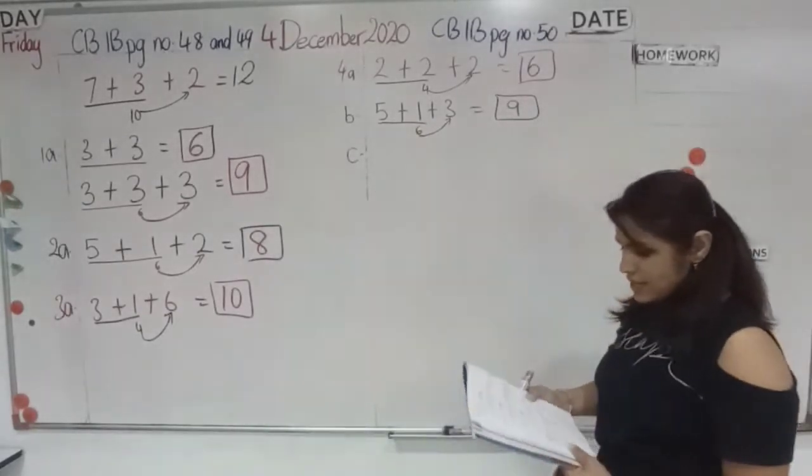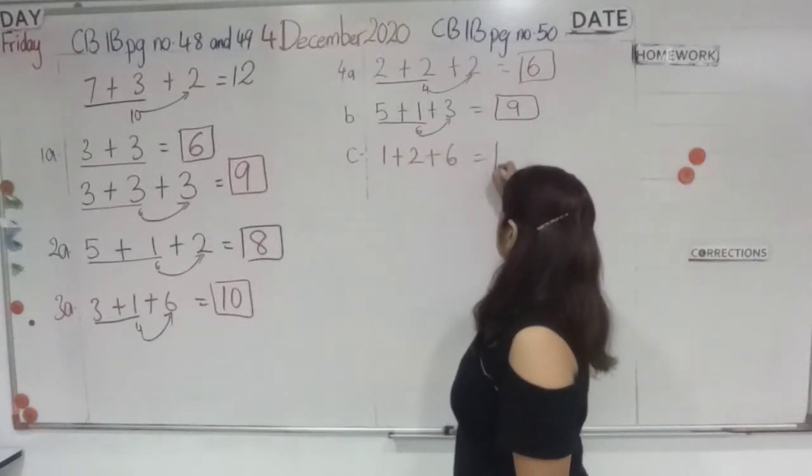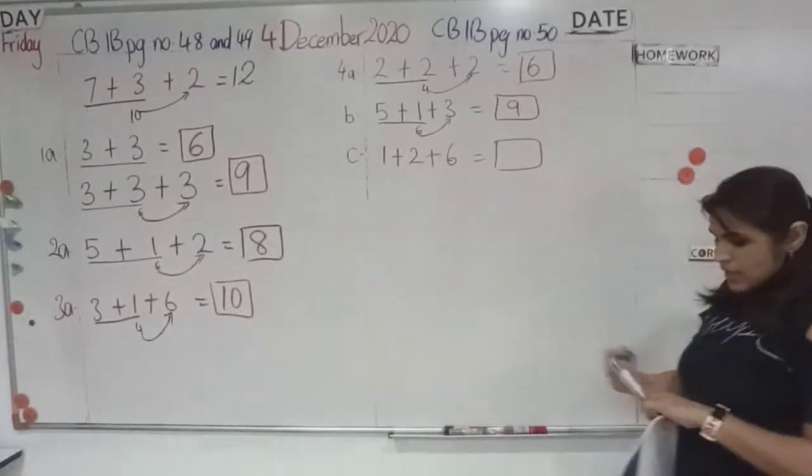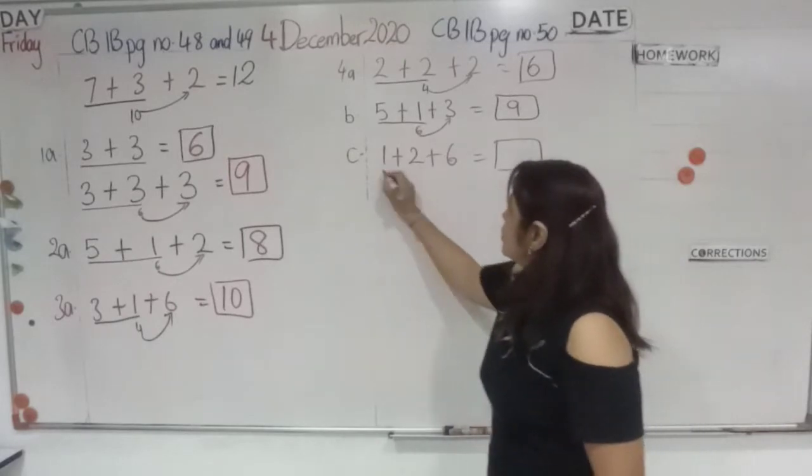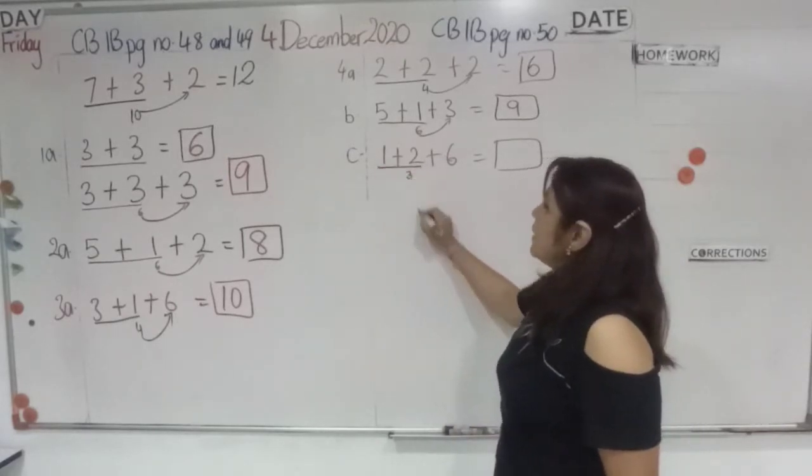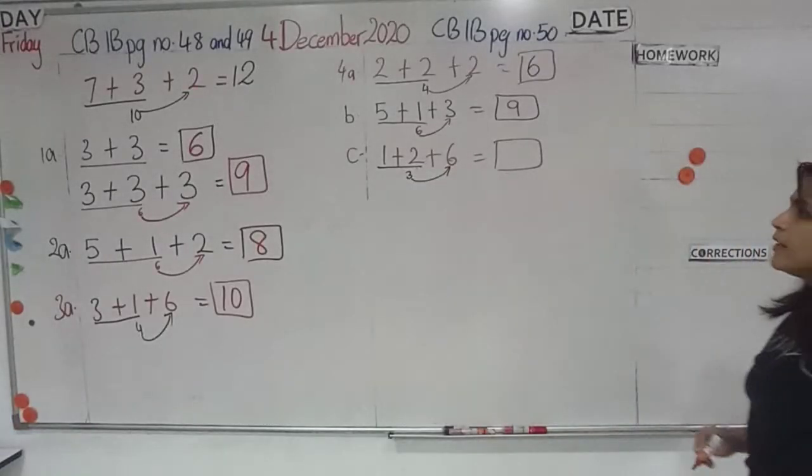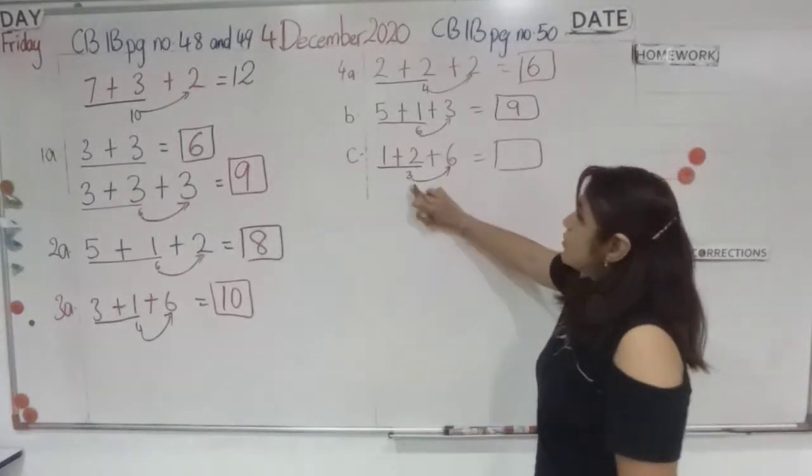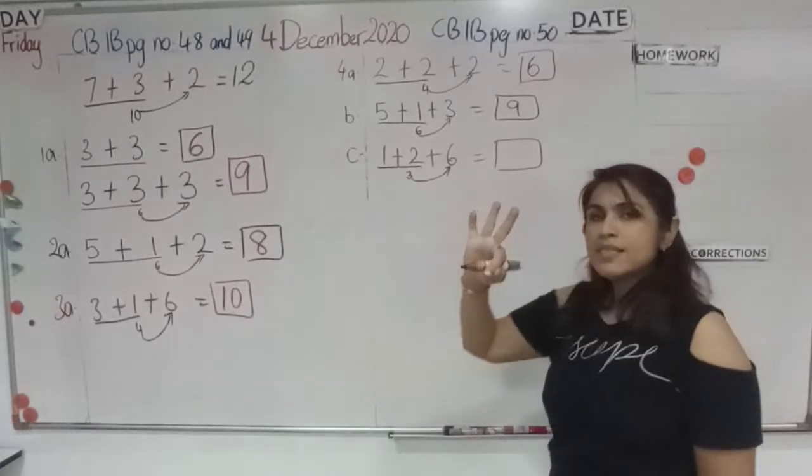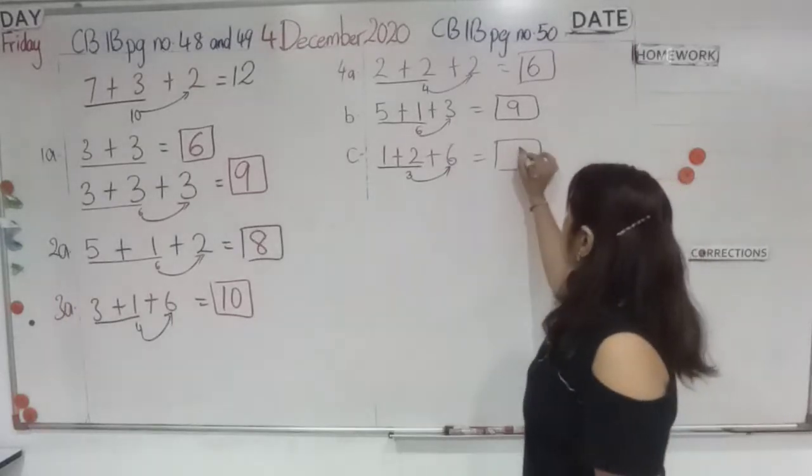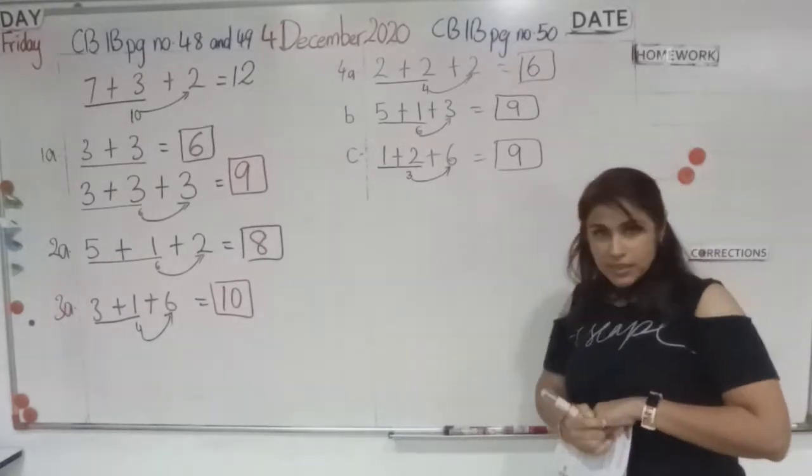Now, 4C. Next equation is, 1 plus 2 plus 6. Here, you underline 1 plus 2, which is 3. Then, you draw an arrow pointing to 6. Then, from here, 3 plus 6 makes 6 in your brain, 3 on your fingers, after 6, 7, 8, 9. So, this is how easy adding 3 numbers are.